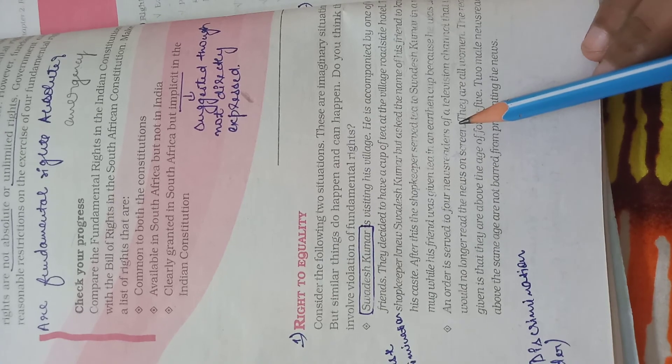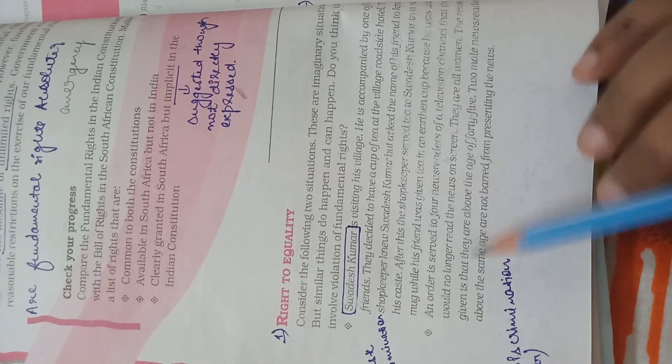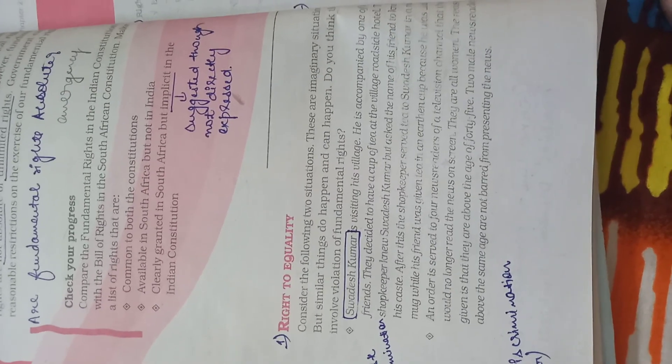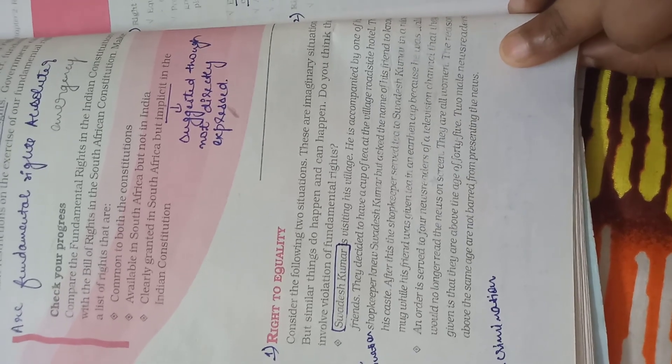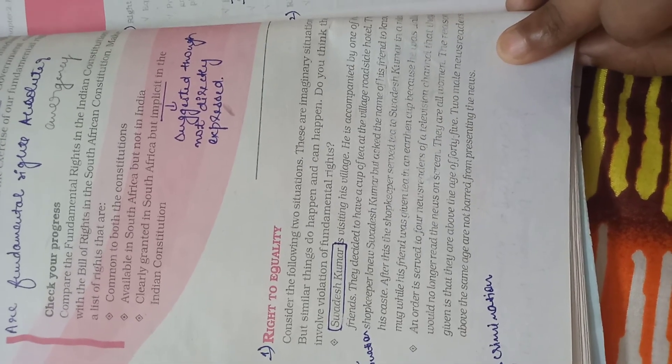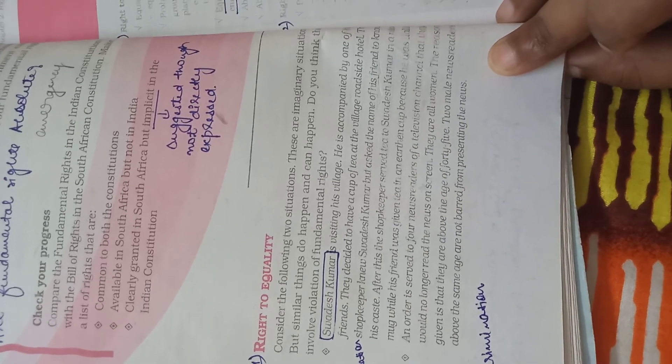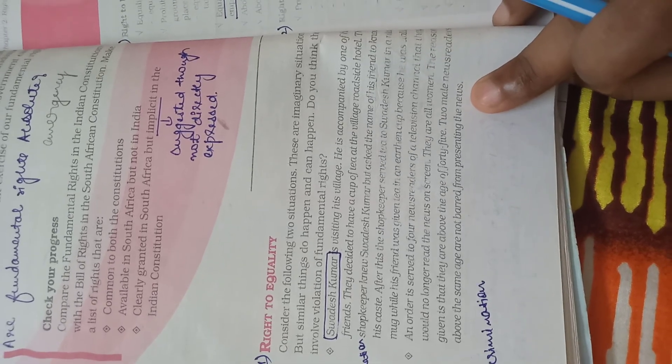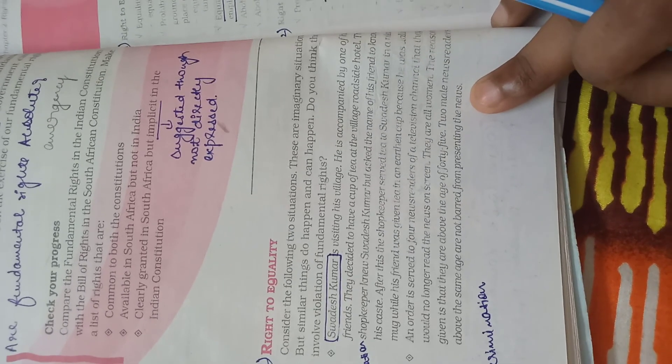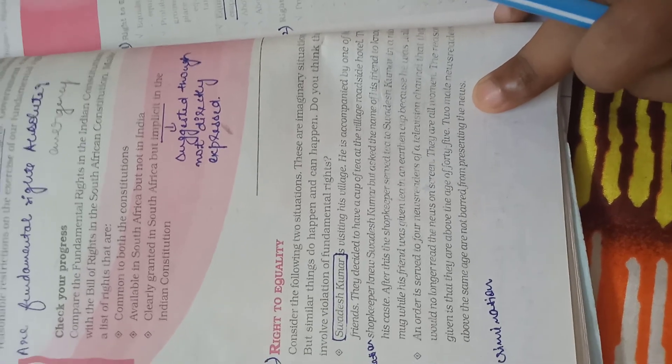Let us discuss the second example. An order is served to four news readers of a television channel that they would no longer read the news on screen. They are all women. The reason given is that they are above the age of 45. The two male news readers above the same age are not banned from presenting the news.